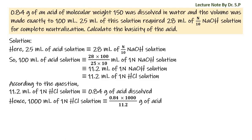Hence, 1000 milliliter of 1N HCl solution is similar to 0.84 into 1000 by 11.2 grams of acid. That is equal to 75 grams of acid.